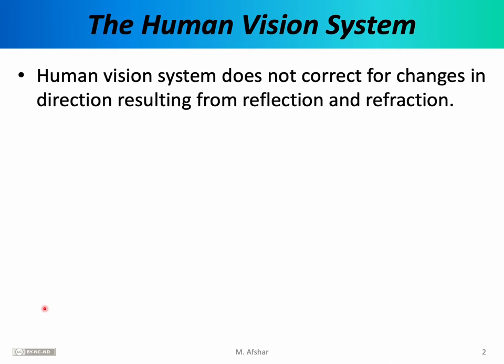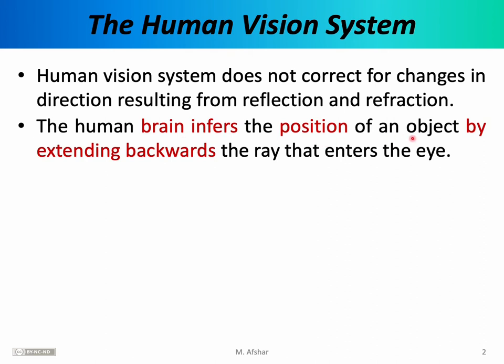As we've seen, rays or beams of light change their direction of propagation at the boundary between two media. We've seen precise equations like the law of reflection and the law of refraction that tell us exactly how the reflected or refracted beams will propagate. However, on a very basic primitive level, the human vision system is not at all aware of these changes in the direction of propagation. The human brain basically infers the position of an object by extending backwards the ray that enters the eye, so the human vision system sees everything along a direct line of sight.